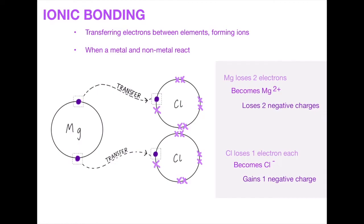Once this reaction has taken place we are left with Mg²⁺ and Cl⁻. A lot of people get confused at the fact that even though Mg loses electrons, it ends up being Mg²⁺. The reason for this is because electrons are negatively charged — if you lose a negative charge you're going to be more positive than you were beforehand, and this is the same principle for the chlorine. It becomes negative because it gains one electron on each atom.